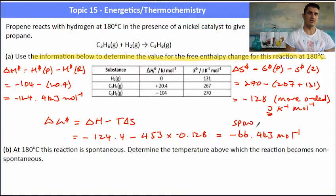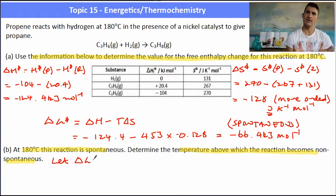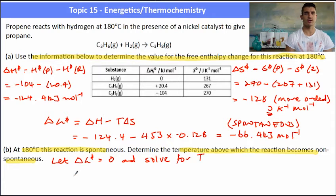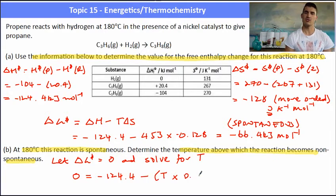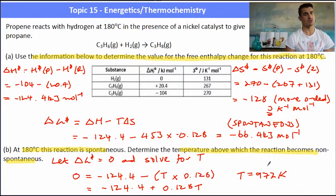At 180°C this reaction is spontaneous, proved by the negative delta G. To determine the temperature above which the reaction becomes non-spontaneous, we set delta G = 0 — the pivot point for this reaction. We call this the critical temperature. Substituting delta G = 0 into the equation ΔG = ΔH − TΔS and rearranging to solve for T gives a critical temperature of 972 Kelvin. Above this temperature, the reaction will become non-spontaneous.